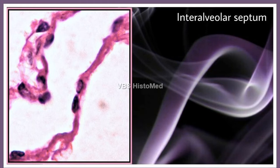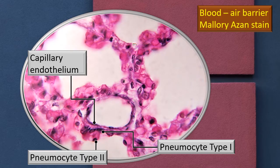Looking at the intra-alveolar septum at oil immersion magnification using Mallory's stain: there are two types of cells lining the alveolus. One is a flat cell called pneumocyte type 1. The second is identified by its signature feature — it projects like a small bulbous projection into the lumen, and that is called the type 2 pneumocyte. The third type of cell in the immediate vicinity is the capillary endothelium. These three are very important must-identify features in an alveolus at high power.